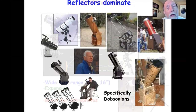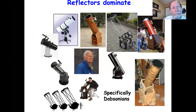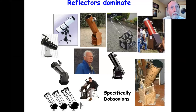Today, most amateurs use reflectors, and most employ a variation of the alt-az mount. Even when the base of the telescope is low to the ground, you can get a motor drive with computer-assisted functions. Further, with new materials and designs, even large telescopes are fairly portable.